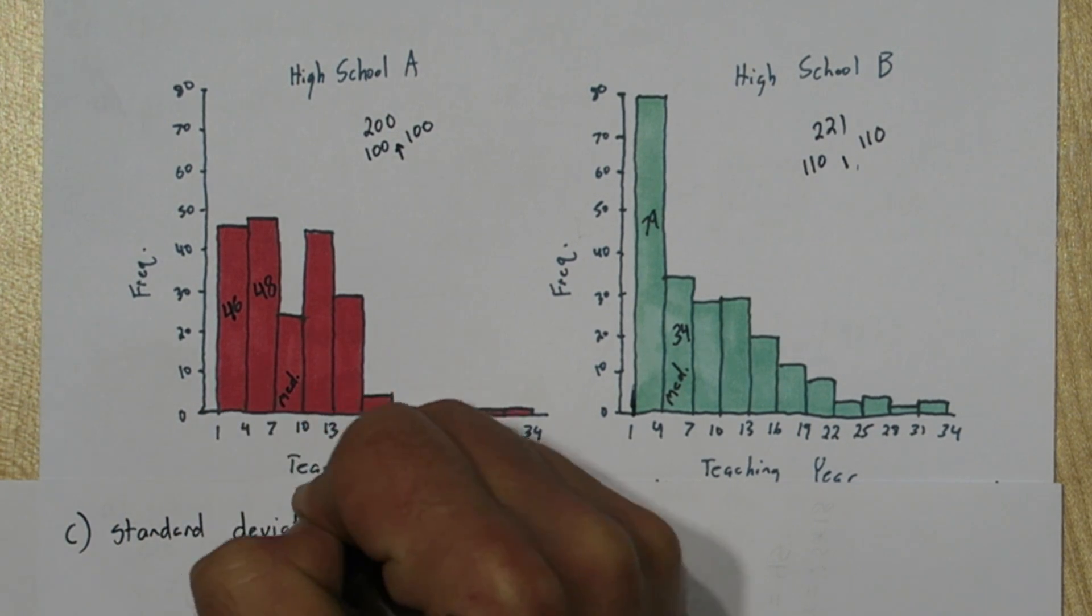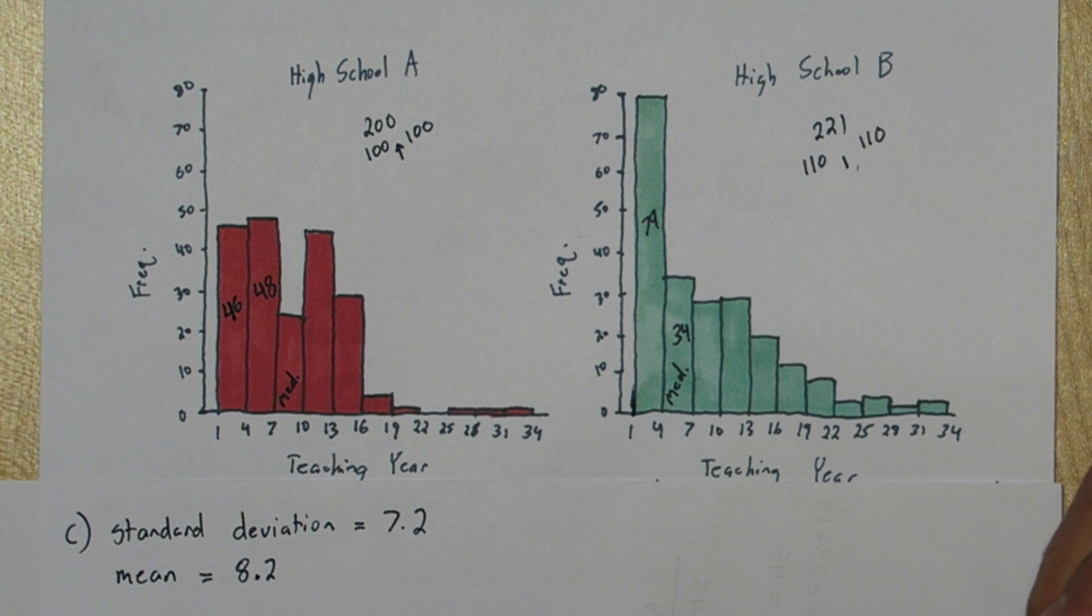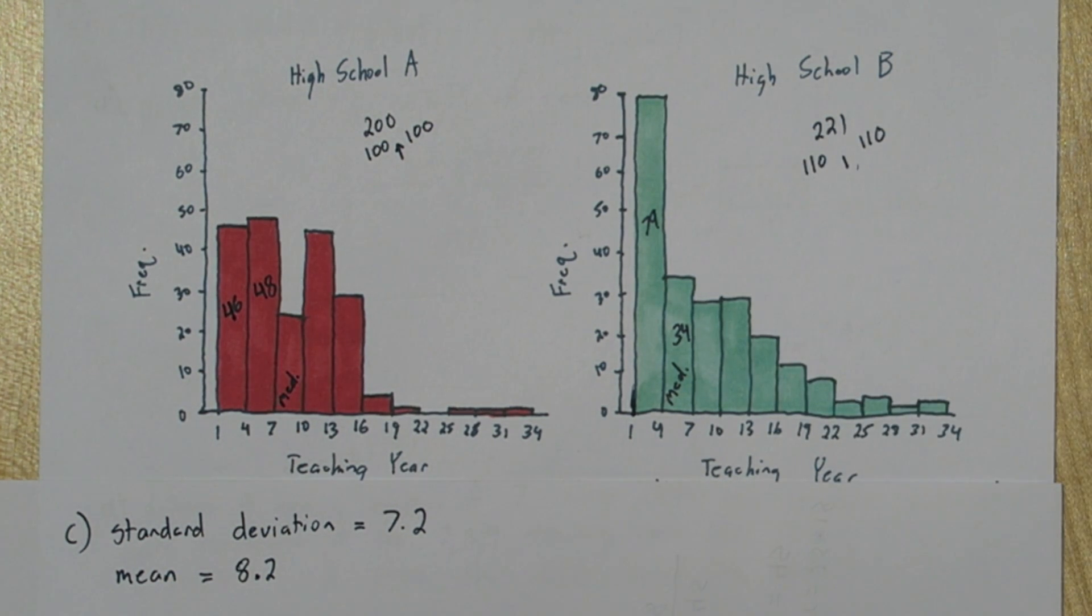For part C, they tell us the standard deviation for high school B is 7.2, and we know the mean is 8.2, and we're trying to calculate the probability of a randomly selected teacher being within one standard deviation of this mean. Now you might be tempted to use the empirical rule here and say that 68% of the data is within one standard deviation. But that rule works for normally distributed data. This is clearly not normally distributed, so we can't use that rule. So what do we do?